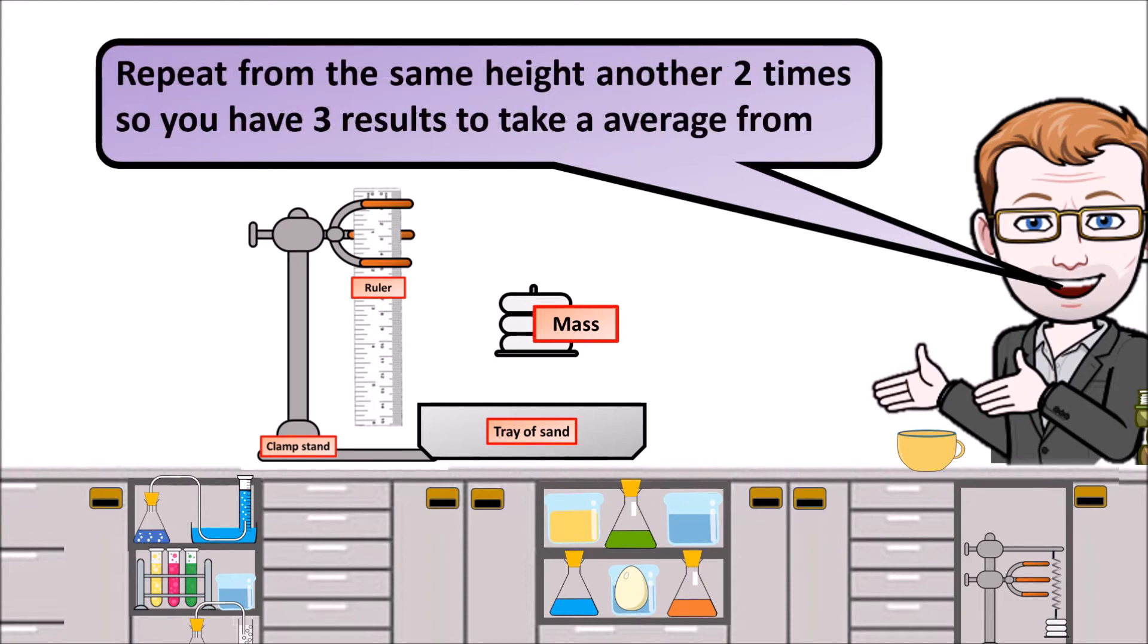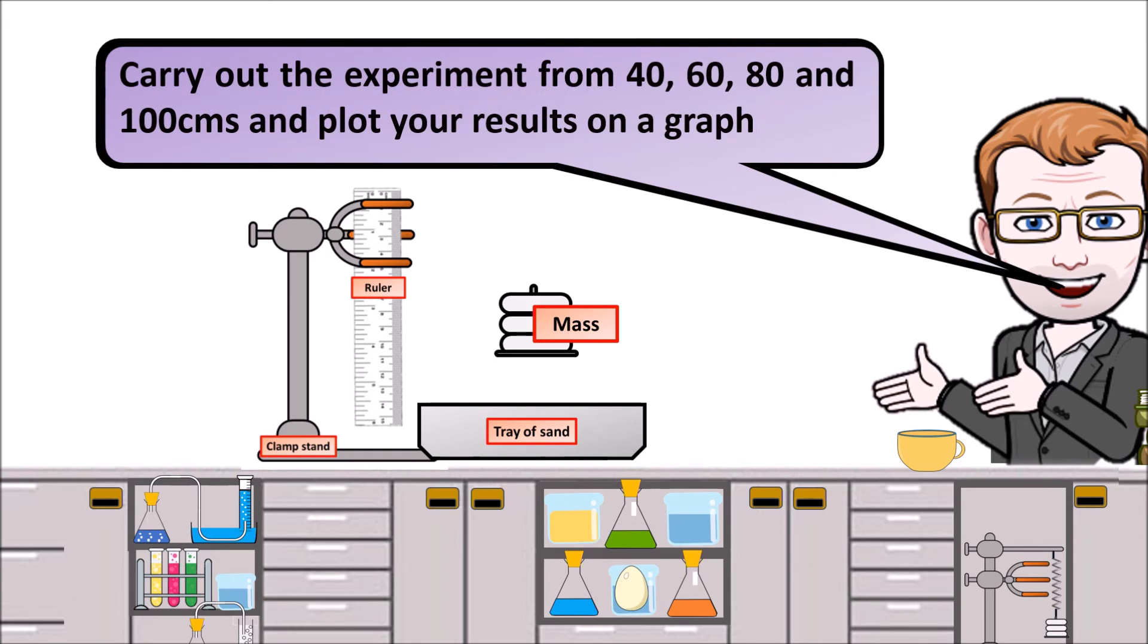Then repeat from the same height another three times so you have three results that you can take a mean average for. And then carry out the same experiment from heights of 40, 60, 80 and 100 centimeters.